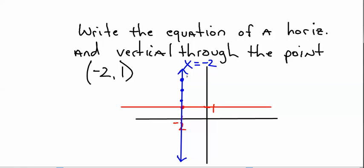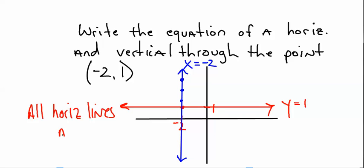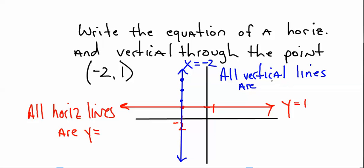All vertical lines have an equation of x equals wherever that line hits on the x-axis. You can make a note that all horizontal lines are y equals a number, and all vertical lines are x equals a number.